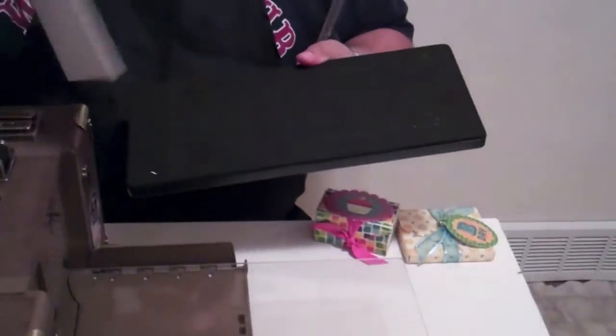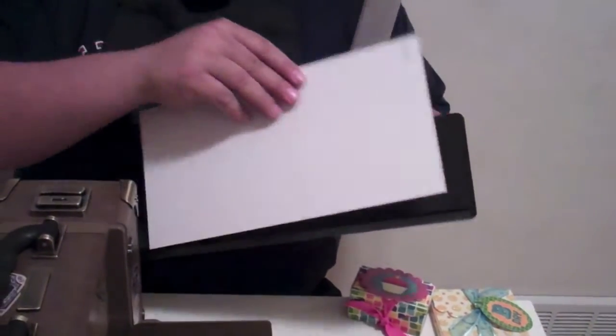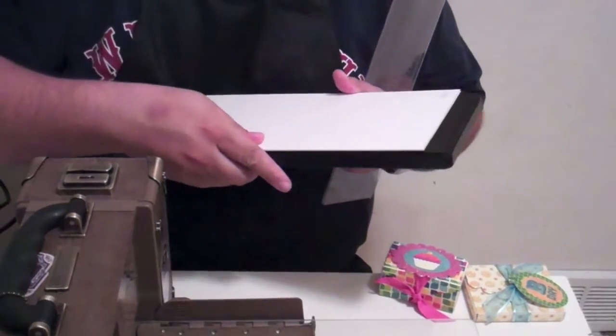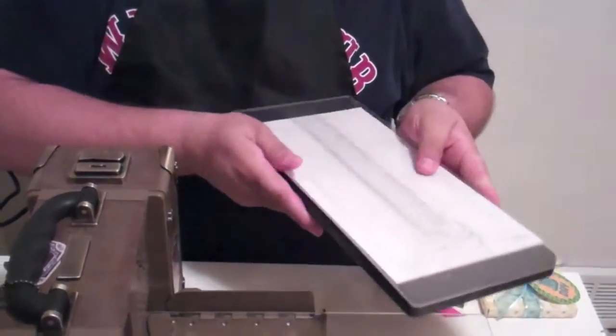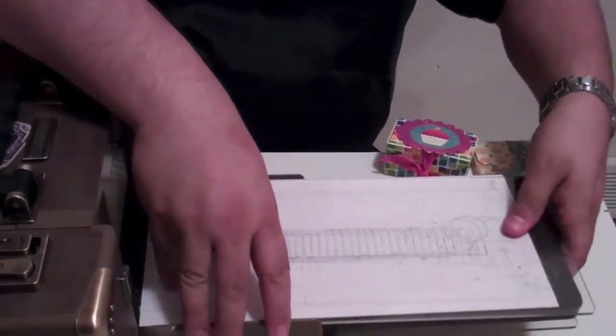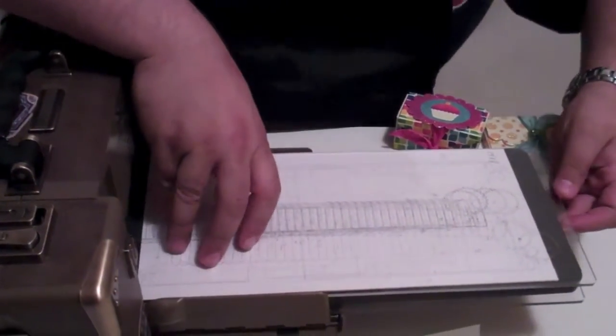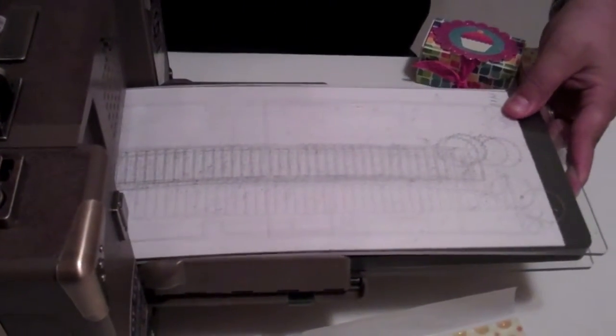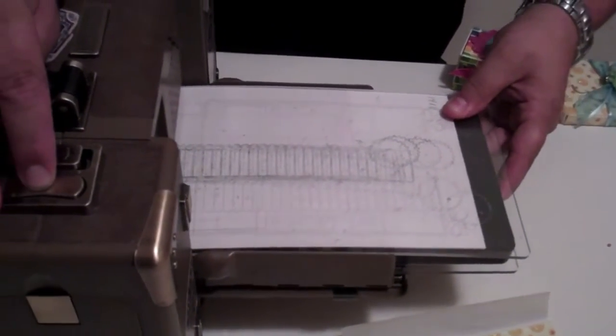Then we're going to put our die, and then we're going to put the paper face down. And you want to make sure that it goes over. And then you take your other mat and you slide it on top. Then you're going to take both of this. And I like just to double check it, slide it in all the way.